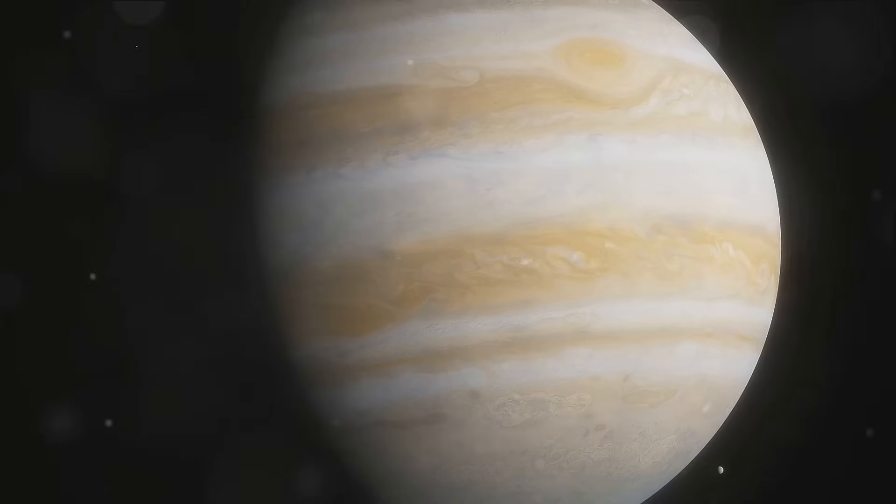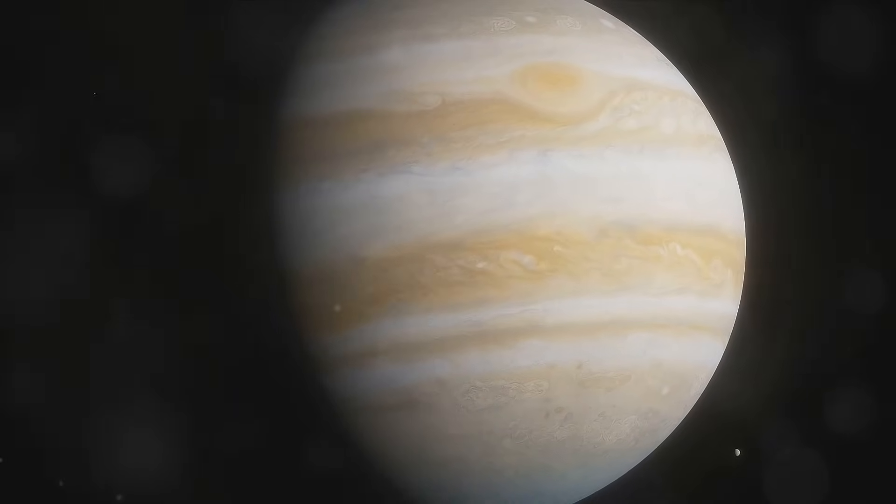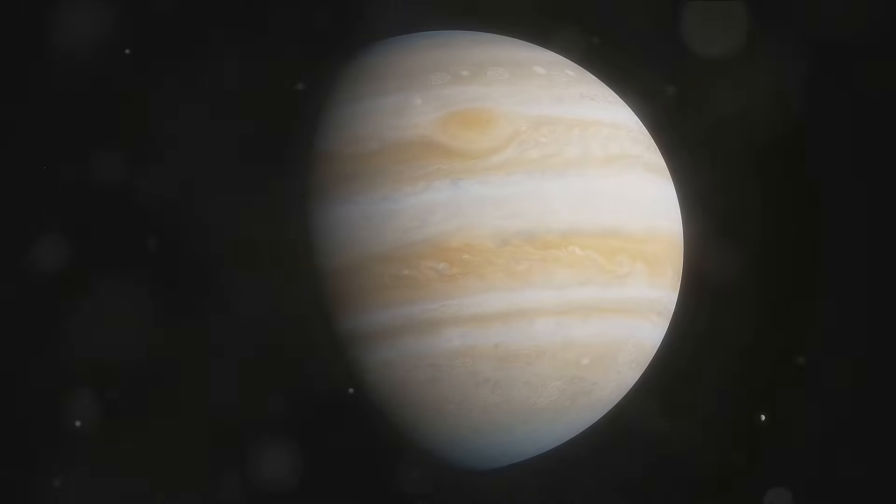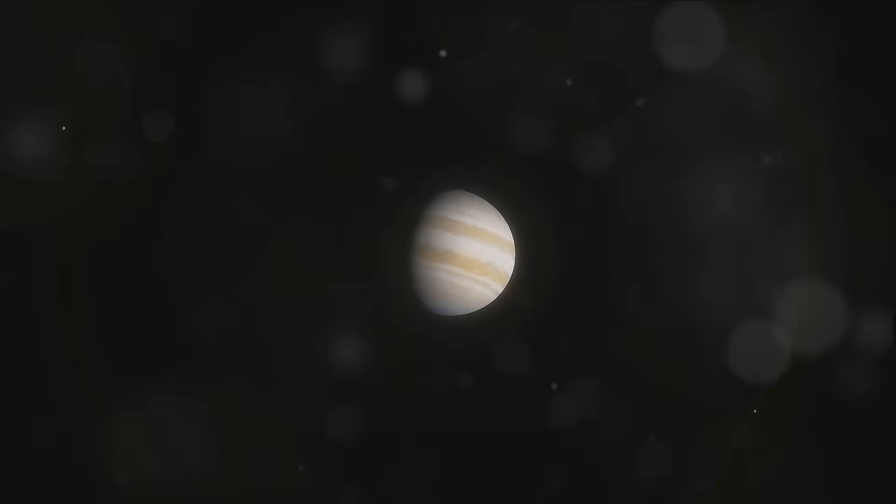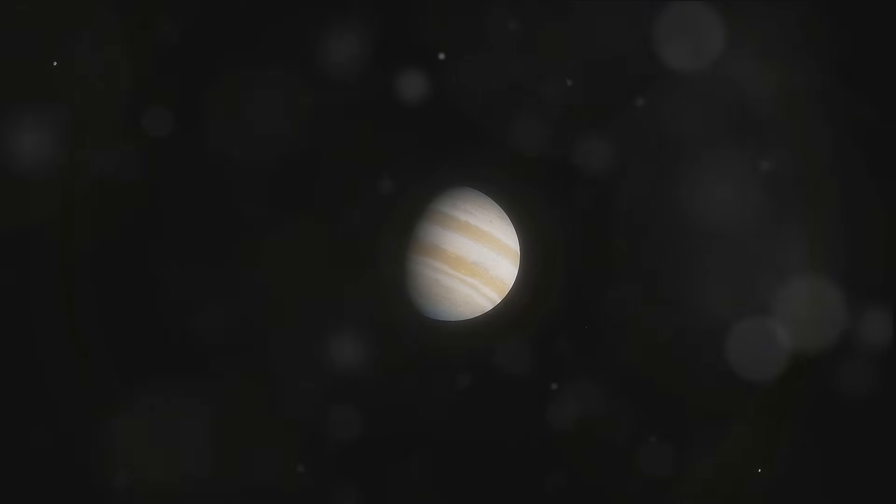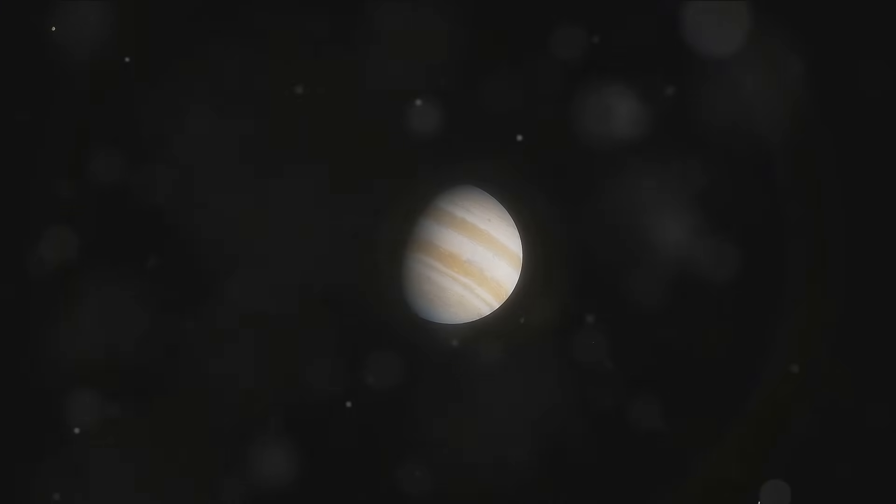And speaking of storms, let's talk about the Great Red Spot, Jupiter's most recognizable feature. This massive storm larger than the Earth itself has been raging on Jupiter's surface for at least 300 years. It's a perpetual cyclone, a whirl of winds and gusts that never seems to end.